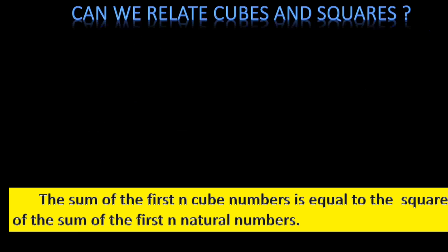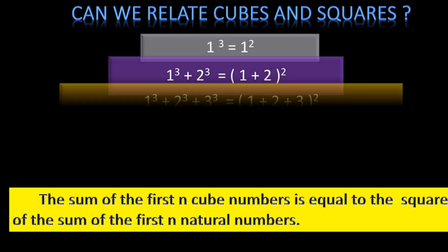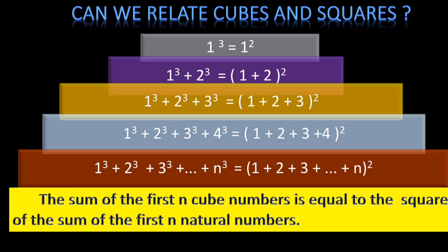Can we relate cubes and squares? The sum of the first n cube numbers equals the square of the sum of the first n natural numbers. For example: 1 cube = 1 squared; 1 cube + 2 cube = (1 + 2) squared; 1 cube + 2 cube + 3 cube = (1 + 2 + 3) squared; and so on.